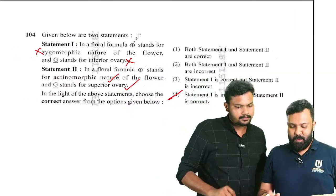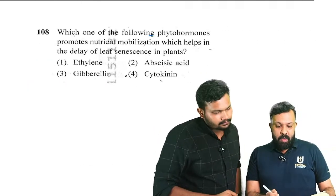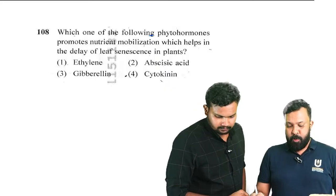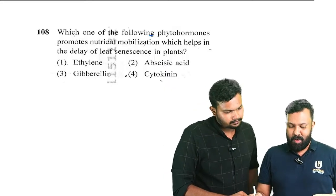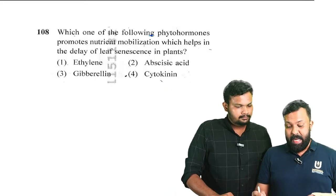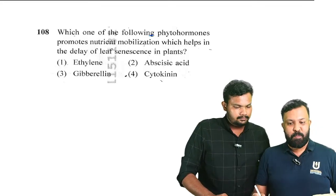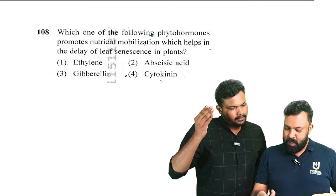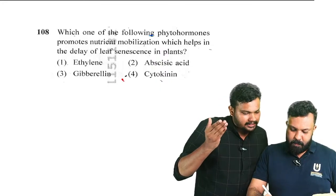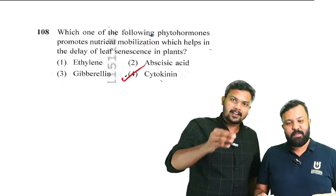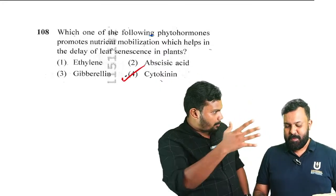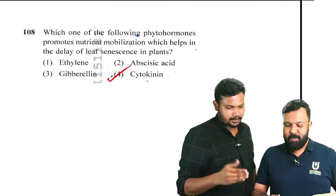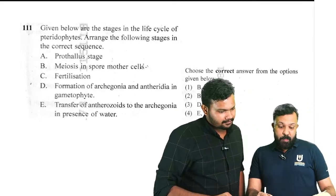Moving on to question number 108: which of the following phytohormones promotes nutrient mobilization and helps in the delay of leaf senescence in plants? From plant growth and development, the answer — cytokinins — promotes nutrient mobilization and delays leaf senescence. That is the right answer.